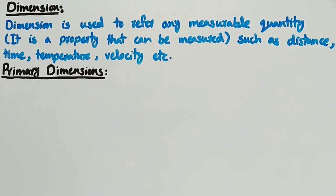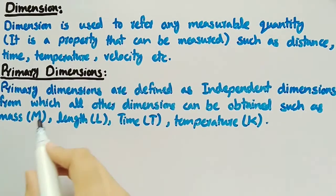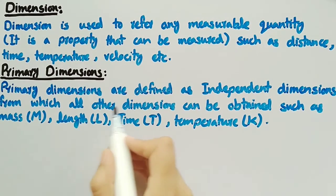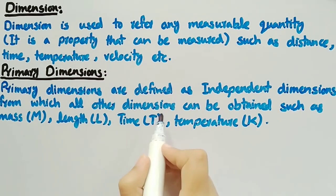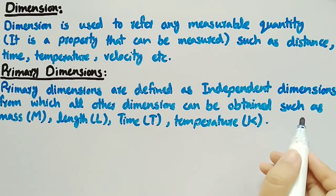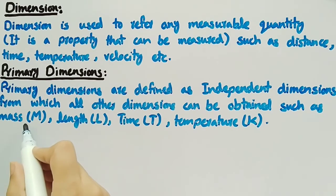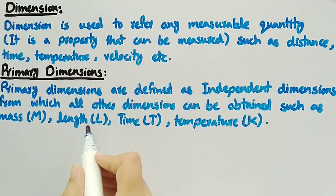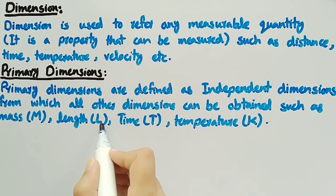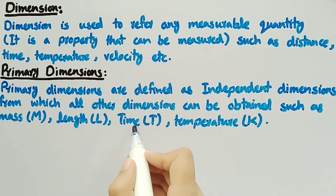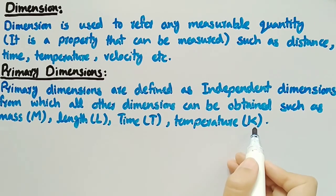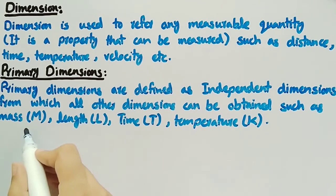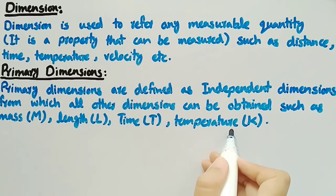Now let's see what are primary dimensions. Primary dimensions are defined as independent dimensions from which all other dimensions can be obtained, such as mass which is represented by M, length which is represented by capital letter L, time which is represented by T, and temperature which is represented by the letter K. These four are primary dimensions.